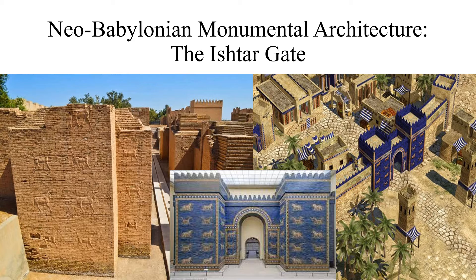The Ishtar Gate was made of bricks but covered in beautiful blue lapis lazuli stone. It was also decorated with animals to signify the strength and power of the Neo-Babylonian civilization. Travelers visiting the ancient city of Babylon would have been impressed and filled with awe as they passed through this gate with its shiny blue stones and impressive but intimidating animals.